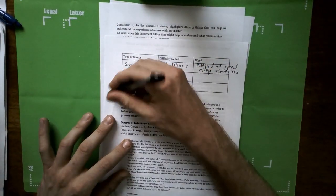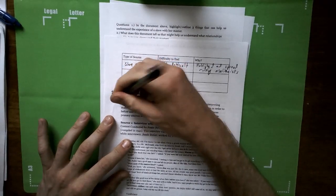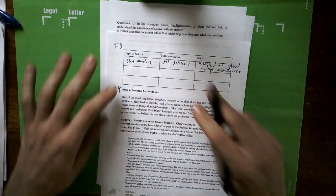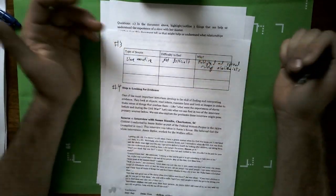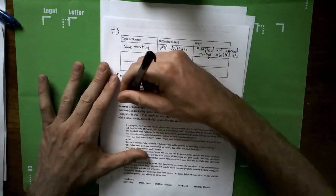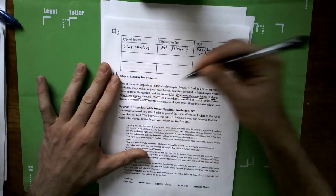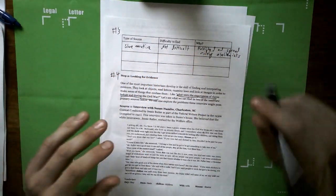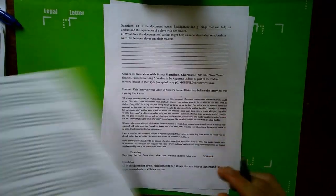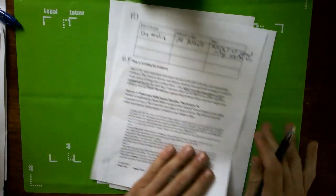So once you complete this grid, you're going to move on to here, which is assignment number four. Again, up here is number three in Google Classroom. And this one is basically going to be looking for evidence. And so the main question, I'm going to underline right here, what were the experiences of slaves like before and during the Civil War?